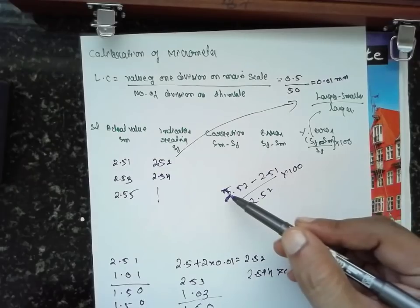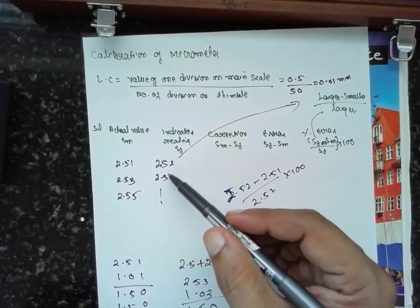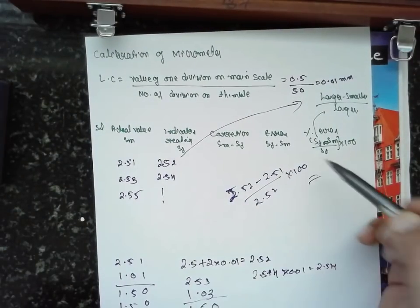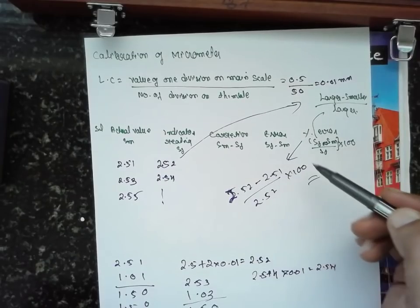In this way, you can do it. That means larger minus smaller, divided by larger. You will get error, percentage of error. In this way, you have to follow the procedure.